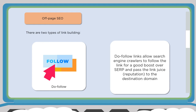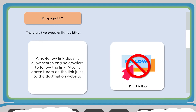Do-follow links allow search engine crawlers to follow the link, giving you what they call 'link juice,' which establishes reputation for your domain. A no-follow link doesn't allow search engines to follow the link, so it doesn't pass link juice. However, search engines like Google are smart enough to pick up the association between a website that talks about your website and your website itself. Even a no-follow or linkless mention on a very prominent site may still get you credit, as Google recognizes linkless backlinks.